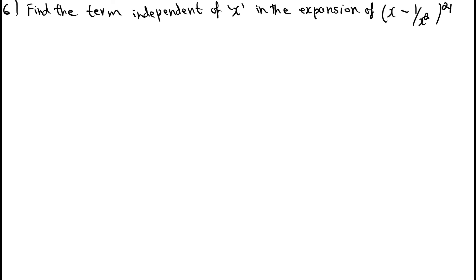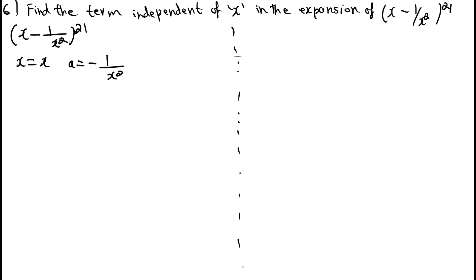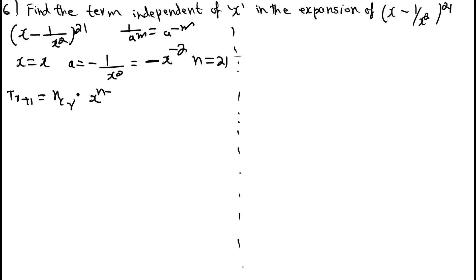Next question: find the term independent of x in the expansion of (x - 1/x²)²¹. Write x = x, a = -1/x² = -x⁻², and index n = 21. General term: Tᵣ₊₁ = ²¹Cᵣ · x^(21-r) · (-x⁻²)^r = ²¹Cᵣ · x^(21-r) · (-1)^r · x^(-2r).